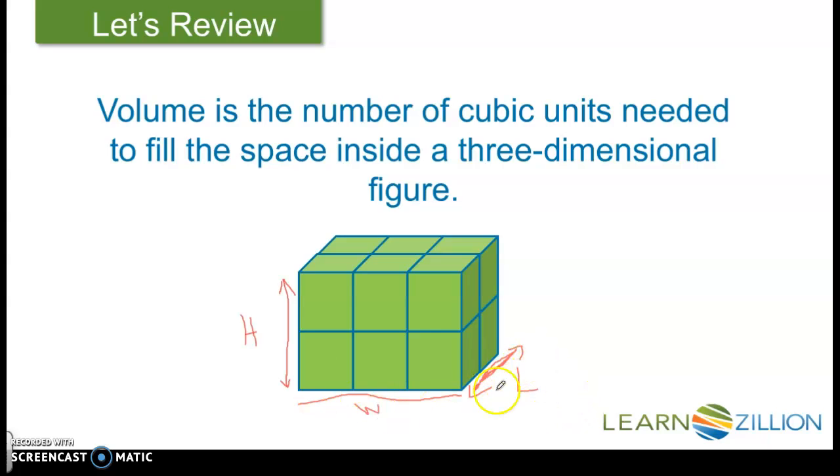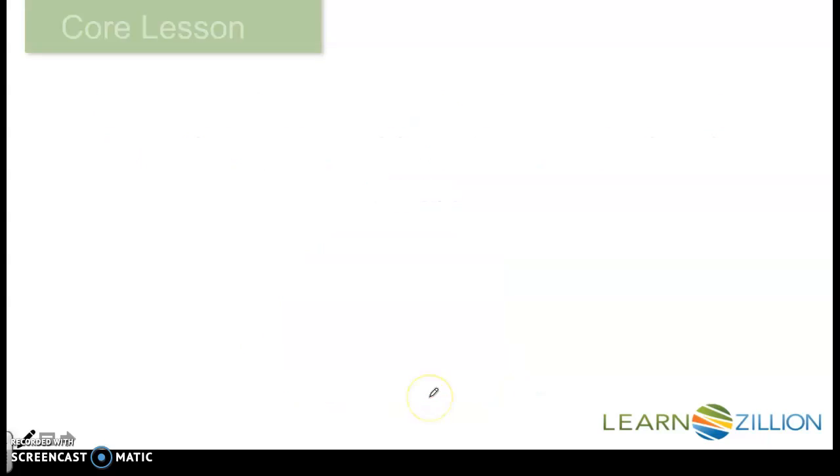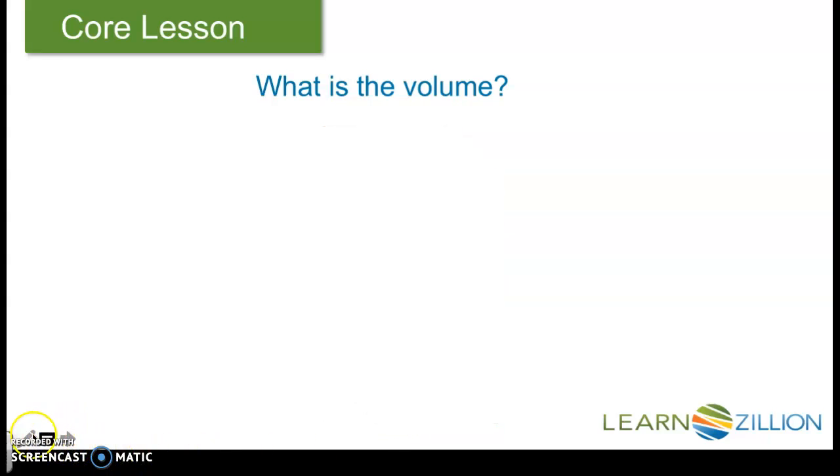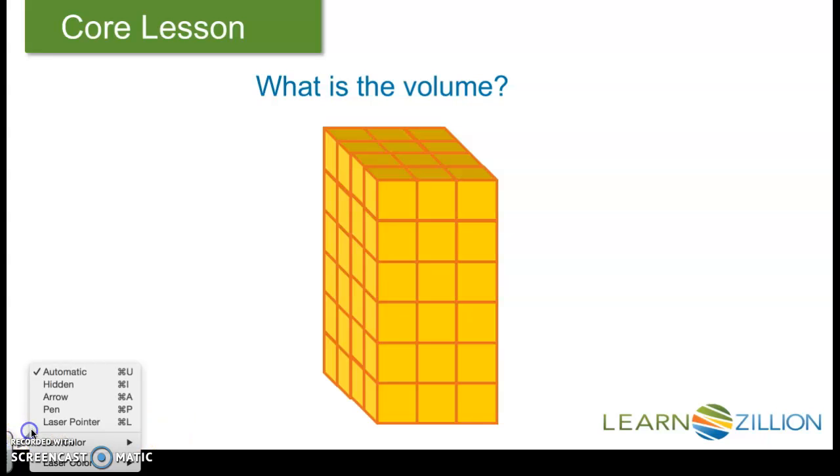So if we have a box like this, again, think of this as a refrigerator. Our width is always going to be the front of it. Looking at it this way, that's our first dimension, the width. Our length from front to back. And then our height from top to bottom, how tall it is. So if we know the dimensions of our box, we can multiply the length times the width times the height and figure out the volume.